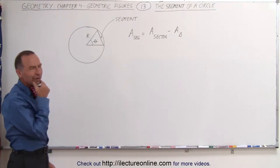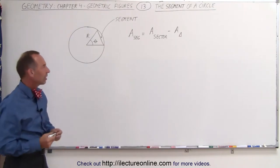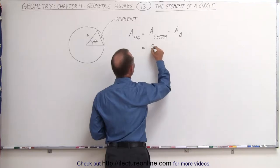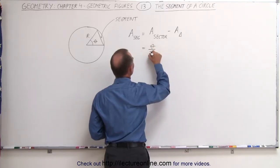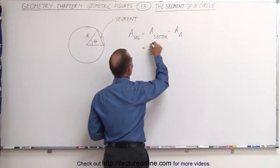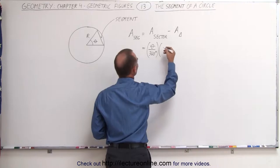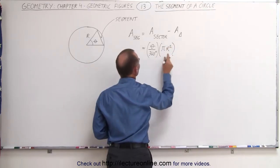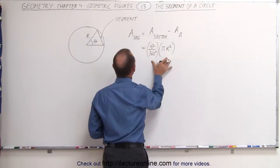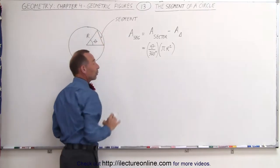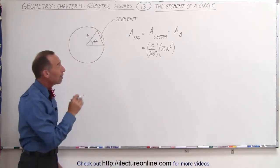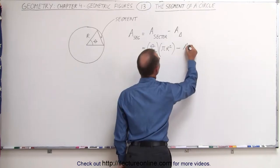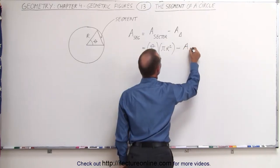We already know how to find the area of the sector. That is equal to the angle theta divided by 360 degrees — the ratio — times the area of the whole circle, which is pi r squared. This is the area of the entire sector as we saw in the previous video. But now from that we want to subtract the area of the triangle.